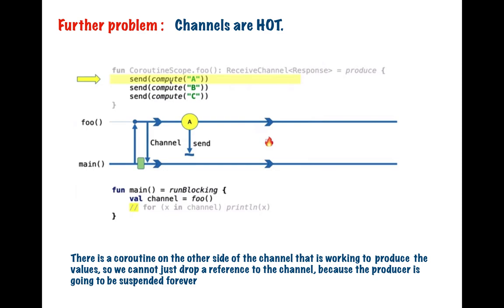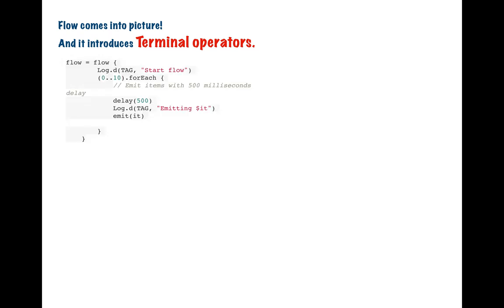Now here comes Kotlin Flow APIs, and along with it, it introduces terminal operators. What we need to figure out is: if somehow we can start a flow only and only if the consumer asks for it, then our problem is solved. That's what Flow is.